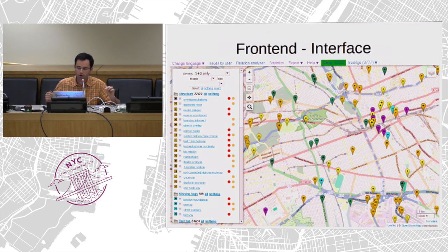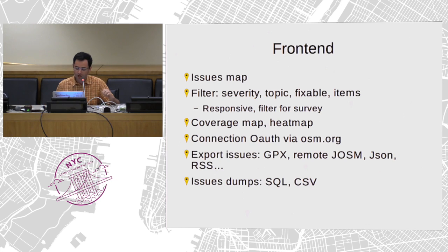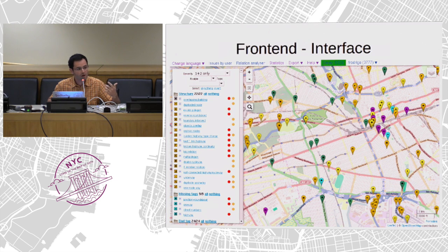This is useful for correction on the ground. You can survey with a mobile device and activate only errors that need to be surveyed in the field. With this interface, you can export errors to other tools like JOSM or export a GPX file to load on a mobile device.